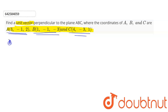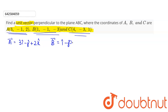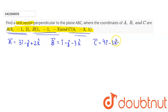These are the position vectors of the points. Position vector A will be 3i cap minus j cap plus 2k cap. Position vector B will be i cap minus j cap minus 3k cap. And position vector C will be 4i cap minus 3j cap plus k cap.